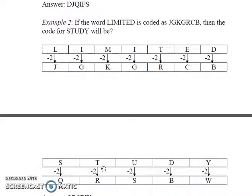In the next example, the word LIMITED is coded as JGKGRCB. L is coded as J, I as G, M as K, and so on. There is a difference of one letter in between L and J, I and G, M and K, and so on. In other words, you will have to go two letters back to get the correct code.